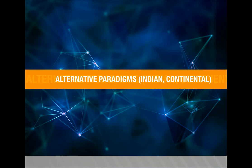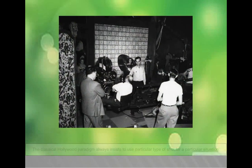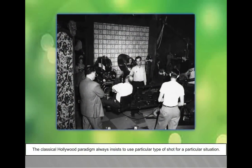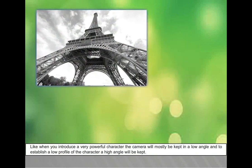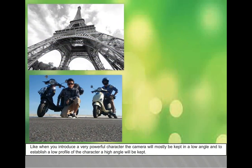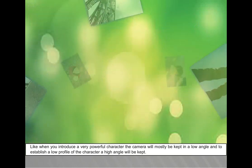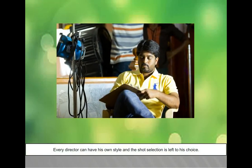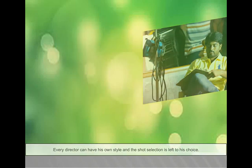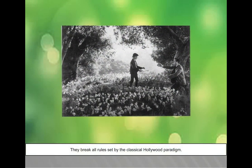Alternative paradigms: the classical Hollywood paradigms insist on using a particular type of shot for a particular situation. For example, when introducing a powerful character, the camera is mostly kept at a low angle, and to establish a low profile, a high angle is used. Every director can have his own style, and shot selection is left to his choice. Indian and continental film is not an exception to this theory — the song and dance sequences of Indian films are the best example, as they break all the rules set by classical Hollywood paradigms.